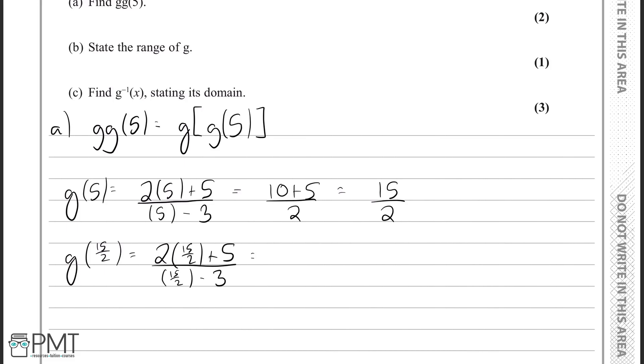Simplifying this, we'll have 15 plus 5 at the top, all over 15 over 2 minus 3, which is 9 over 2. Simplifying this, we'll have 20 over 9 over 2, which is 40 over 9, as I times top and bottom here by 2.